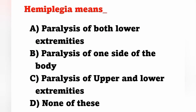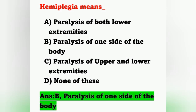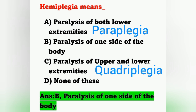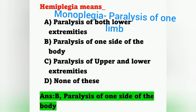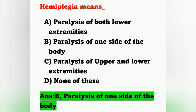Hemiplegia means — option A: paralysis of both lower extremities, option B: paralysis of one side of the body, option C: paralysis of upper and lower extremities, option D: none of these. Hemiplegia means paralysis of one side of the body — option B is correct. Paralysis of both lower extremities is paraplegia. Paralysis of all four extremities is quadriplegia. Paralysis of one limb (either upper or lower) is monoplegia.